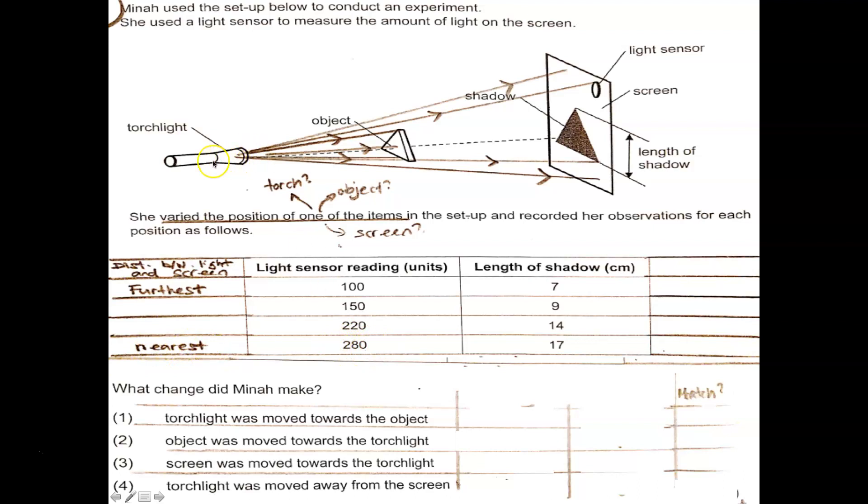When the torchlight is far away from the sensor, the light sensor reading will be very small. And the length of the shadow will also be shorter when the torchlight is much further away. As the torchlight moves nearer to the object, the height of the shadow will increase. So using this information, we've got to make a deduction. What change did Mina make?